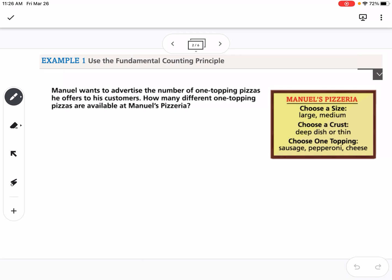You can see there are two sizes, two crust options, and three topping choices. If we want to use the fundamental counting principle, we just multiply those options together. So 2 times 2 times 3 equals a total of 12 possible pizzas.